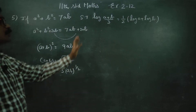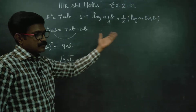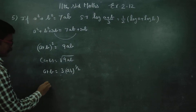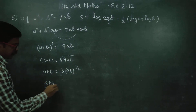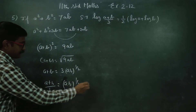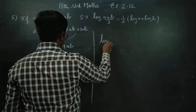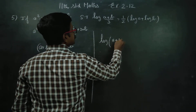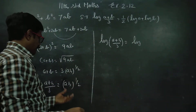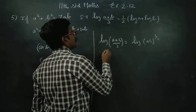Actually, I'm going to take logarithm on both sides. Logarithm of (a plus b) divided by 3 is equal to logarithm of ab to the power 1 by 2. This is one of the steps.